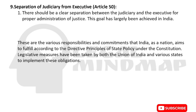Article 50 calls for separation of the judiciary from the executive for proper administration of justice. These are two different bodies with different goals — the judiciary checks whether work is happening correctly according to law, while the executive implements and enforces the laws, ensuring the public follows them. This separation has largely been achieved in India. These are the various responsibilities and commitments that India as a nation aims to fulfill according to the Directive Principles of State Policy under the Constitution.